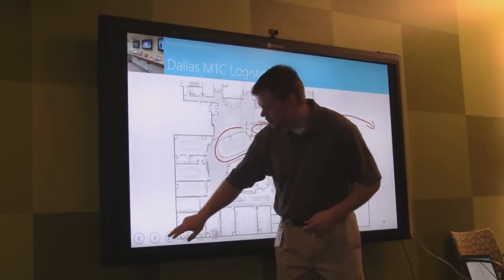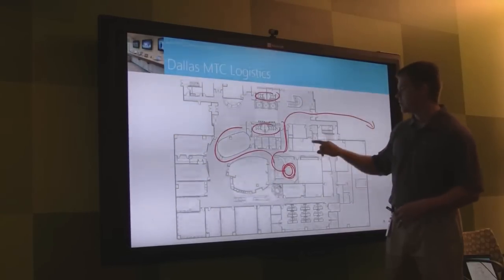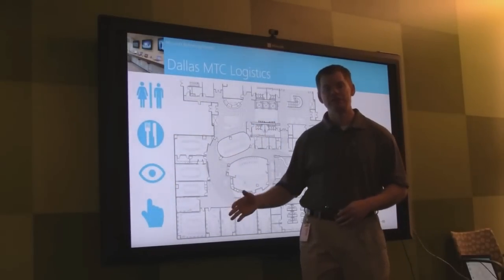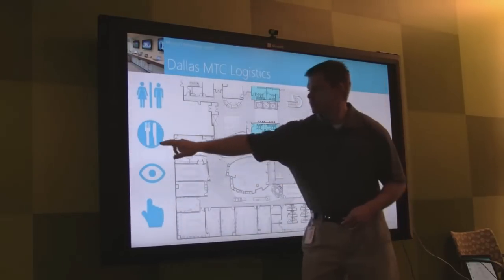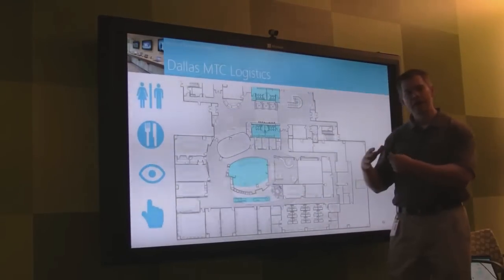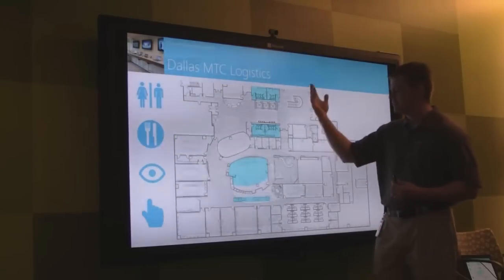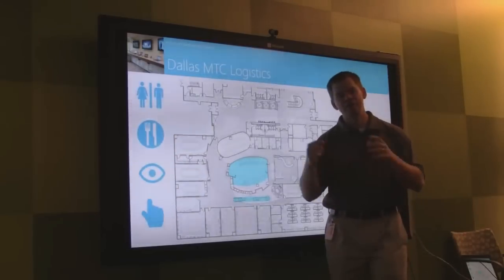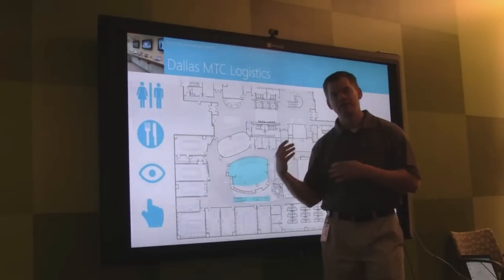The next thing I want to show is how we might combine some of these techniques. Here was inking — now imagine I combine it with trigger animations. This is the same slide, but I've added a few simple trigger animations where I could click a button that shows the restrooms, shows where catering is, maybe shows our envisioning center. I can bring those elements onto my slide and then add inking on top of it. I can click on something and make it go away — you can see how doing inking with animations can really provide a great presentation experience.